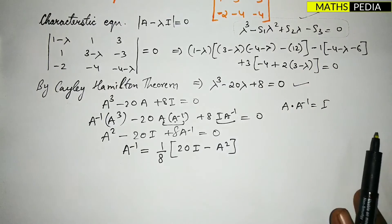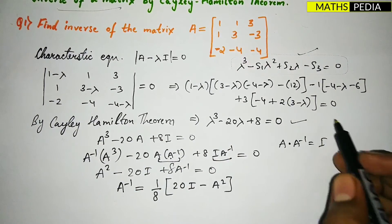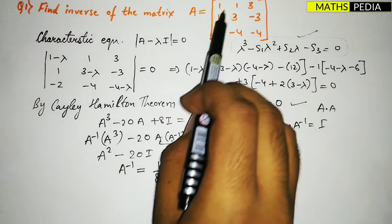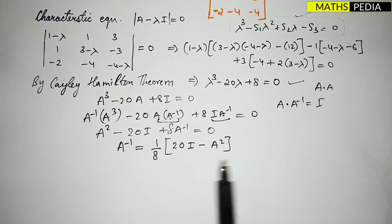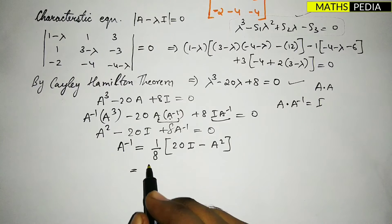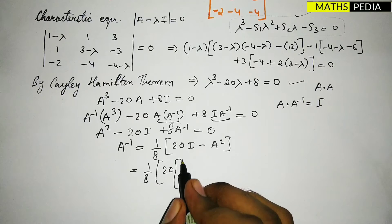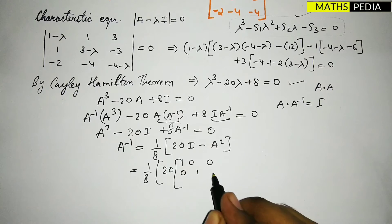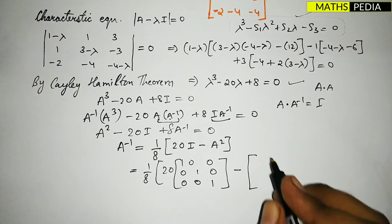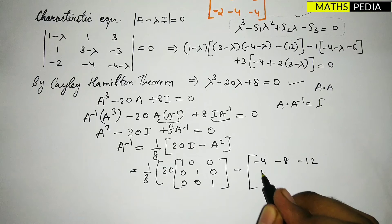So A² is found by multiplying A into A. After that multiplication, I is the identity matrix: [[1,0,0],[0,1,0],[0,0,1]], and 20I gives 20 times this. The computed A² is: [[10, 22, 6], [2, 2, 22], ...] (fill in remaining entries from your computation).